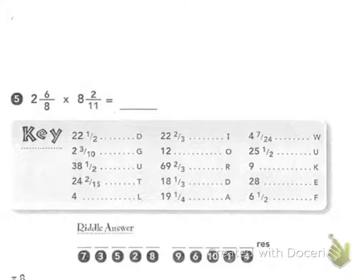So I'm going to reduce that before I even rewrite my number. I know that 6 is divisible by 2, as well as 8 is also divisible by 2. So I could rewrite this problem as 2 and 3 fourths times 8 and 2 elevenths.